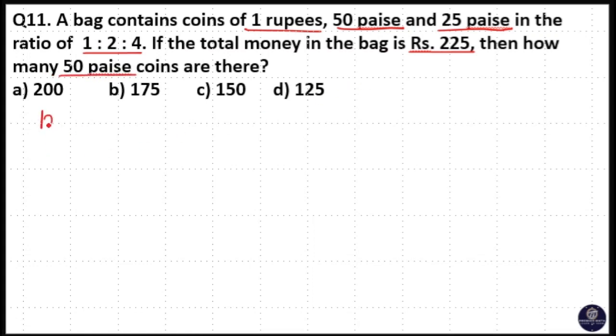So we have 1 rupee, 50 paise and 25 paise coins. The number of coins are in the ratio 1 is to 2 is to 4. Here we know total money in the bag is 225, and that's why I am multiplying a factor: 1x, 2x, 4x. Number of coins are in 1x, 2x, 4x ratio.